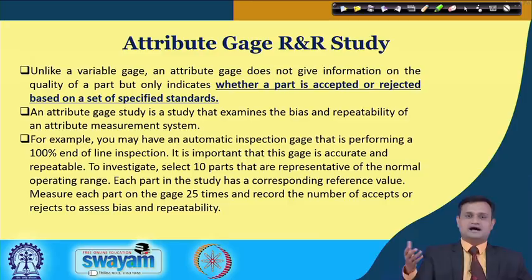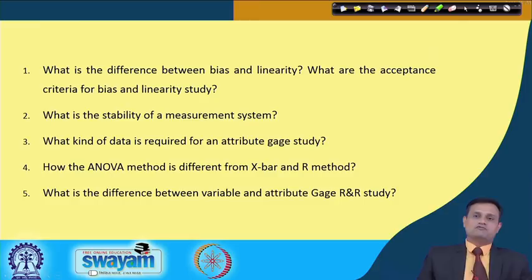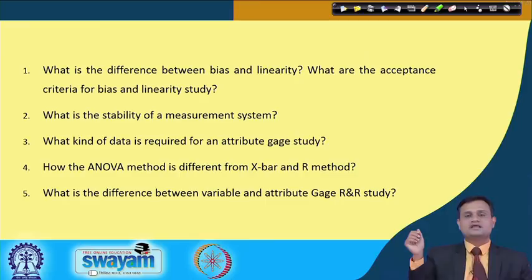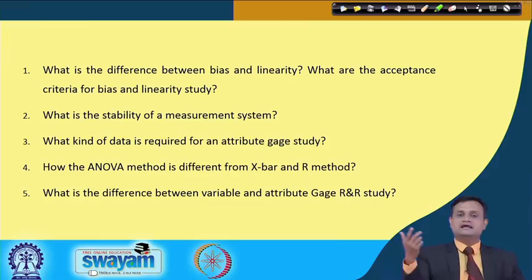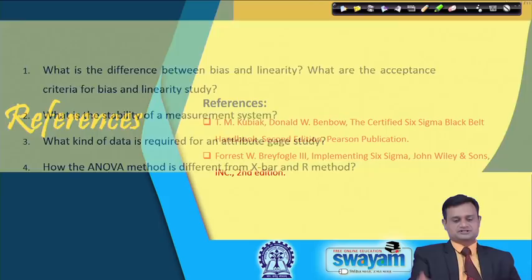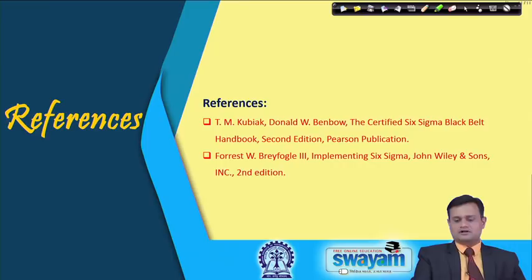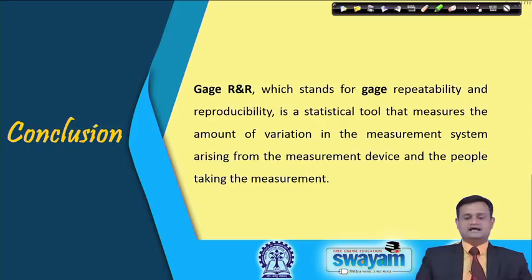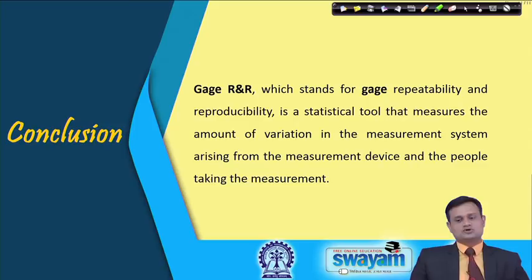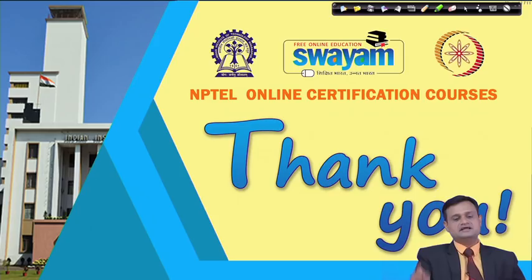I would like to end this session with a few questions for you to introspect and revise: What is the difference between bias and linearity? What are the acceptance criteria for a bias and linearity study? What is the stability of the measurement system? What kind of data is required for an attribute gauge study? How is the ANOVA method different from the X-bar and R method? And what is the difference between variable and attribute types of Gauge R and R study? In conclusion, Gauge R and R — Gauge Repeatability and Reproducibility — is a statistical tool that measures the amount of variation in the measurement system arising from the measurement device and the people taking the measurement.